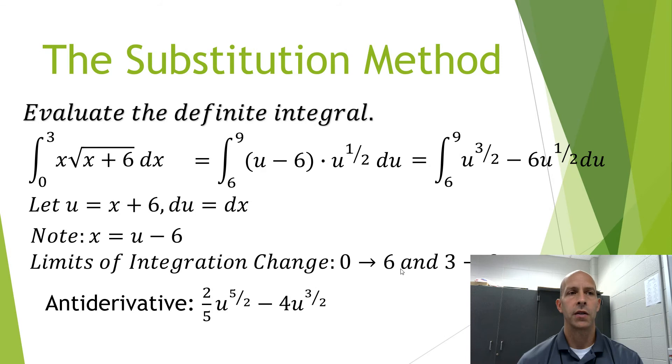To finish this off, we simply substitute 9 into the antiderivative and then subtract 6 substituted into the antiderivative, which gives us a final result of negative 54 plus 48 times the square root of 6, all divided by 5. That is the exact answer.